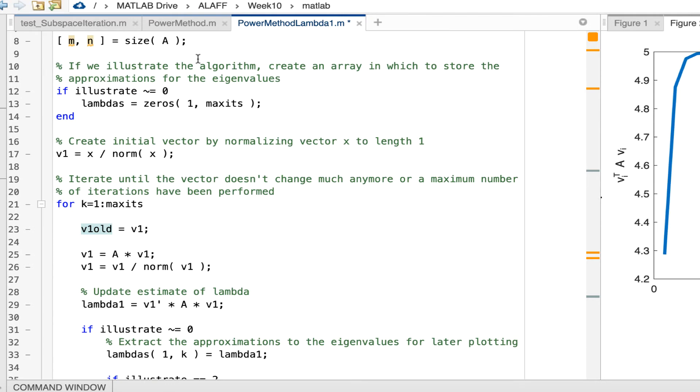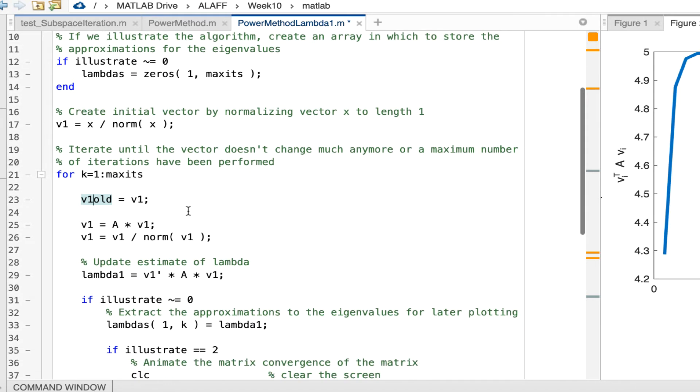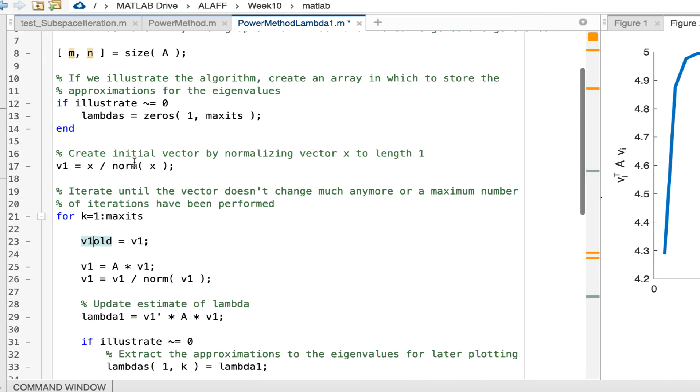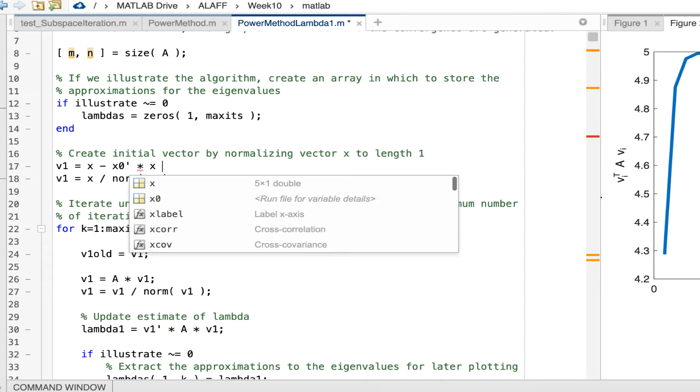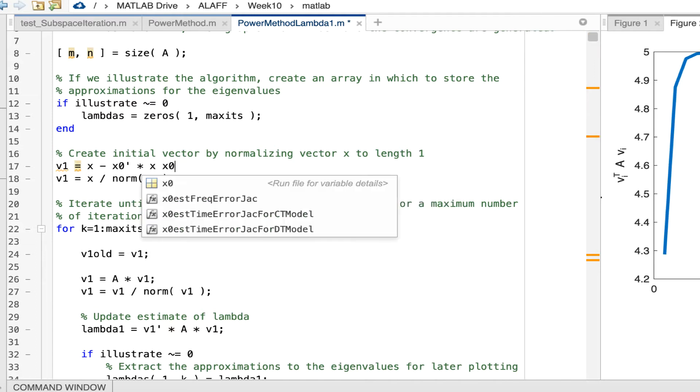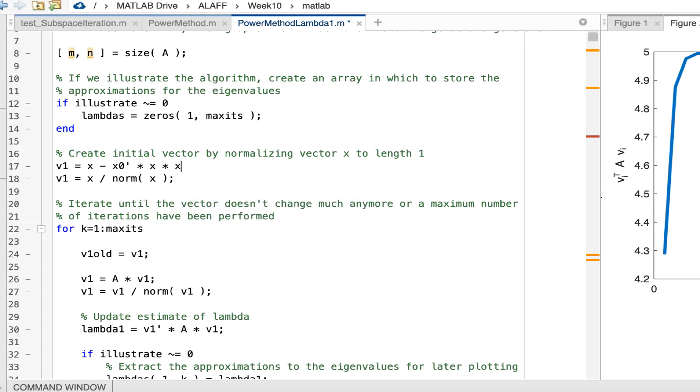Let me just go ahead and do that. We'll just cut to where I'm done with making those changes. Okay, so I think I've made all of those changes. Now let's actually change the algorithm itself. The idea now is that instead of setting v1 equal to the vector x normalized to have length 1, what we want to do is take x and subtract out the component of x in the direction of x0. We're going to assume that x0 is of length 1. Then we want to normalize that vector to have length 1.